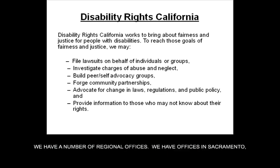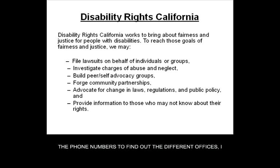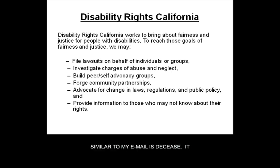We have a number of regional offices located in Sacramento, Oakland, Fresno, Los Angeles, and San Diego, and between our five offices we cover all the counties. To find our phone numbers for the different offices, go to our website: www.disabilityrightsca.org.